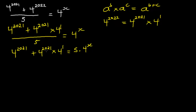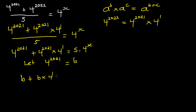Here we have the same terms: four exponent 2021 and four exponent 2021. They are common terms, so I'm going to replace that term with a variable. Let me use B. We are going to let four exponent 2021 be equal to B. So we are going to have B plus B times four exponent one.